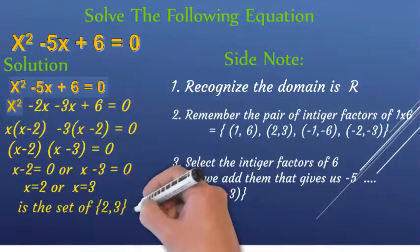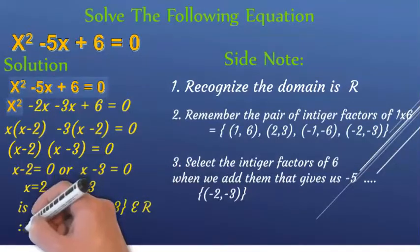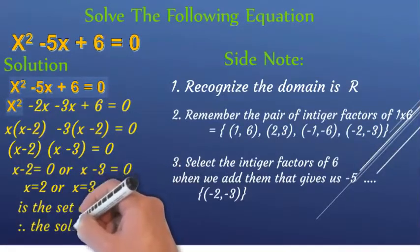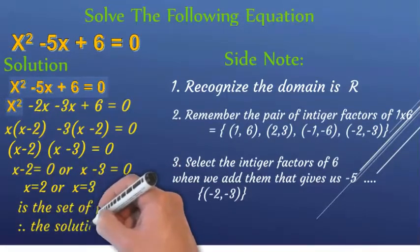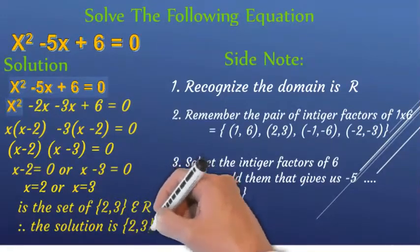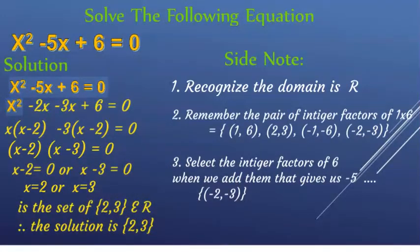Is the set of two comma three an element of the real numbers? Yes, they are — they are in the real numbers. Therefore, our solution contains the set of two comma three.